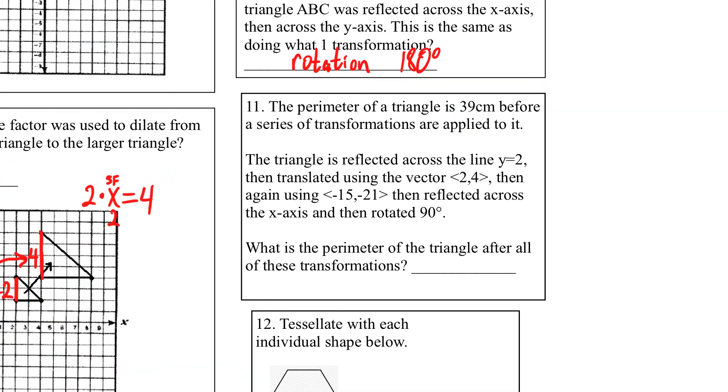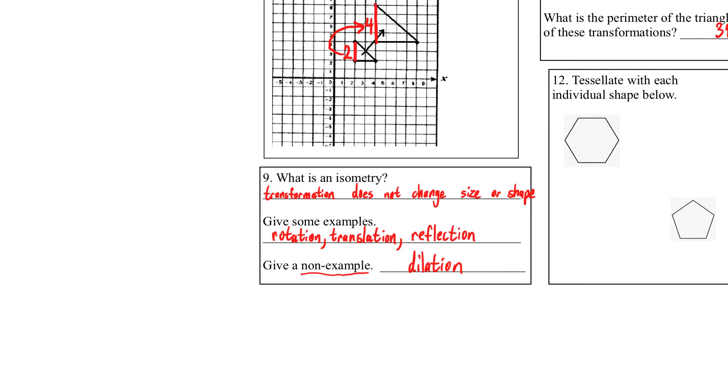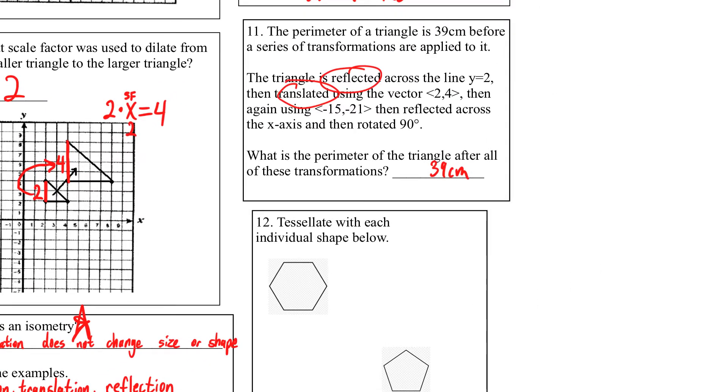Okay, the perimeter of the triangle is 39 before a series of transformations are applied. It's reflected across the y-axis. It's translated using that vector. It's translated using another vector. It's reflected across the x-axis, then rotated 90. What's the perimeter of the triangle after all of that? 39. 39. Because all of these are what? None of them are dilation. They're all isometries, right? None of them change the shape or size.